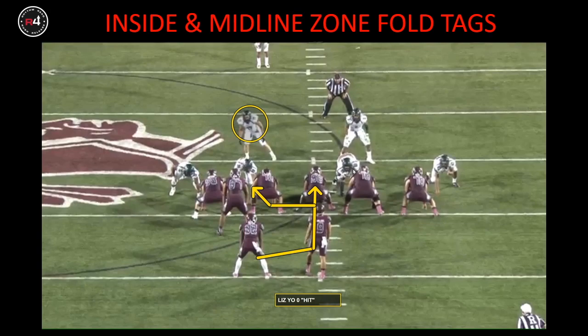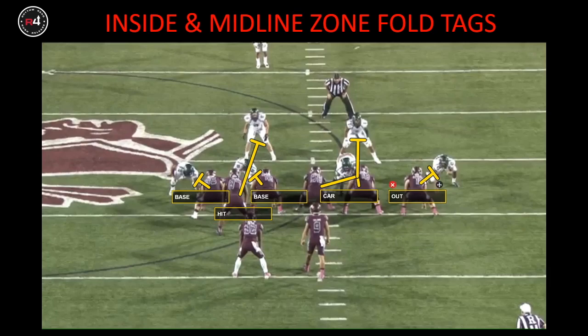This will change the arc entry points slightly, but the combinations will not change. We still have an out block on the five, we're still going to arc the two-eye up to the play-side plug player, it still base blocks on the backside because we've made a hit call. Our backside guard is going to base block the three, take him where he wants to go, and our backside tackle is going to base the five.